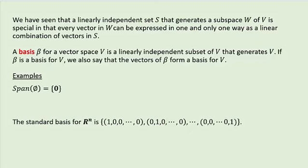Section 1.6. We have seen that a linearly independent set S that generates a subspace W of V is special, in that every vector in W can be expressed in one and only one way as a linear combination of vectors in S. That is, if S is linearly independent, we get uniqueness of representation. So now we define a basis. A basis beta for a vector space V is a linearly independent subset of V that generates V.